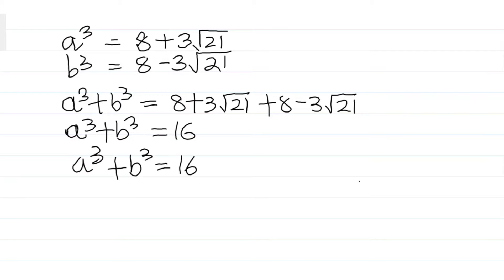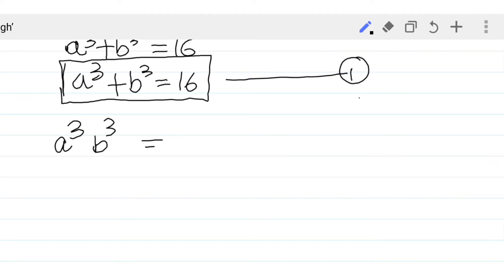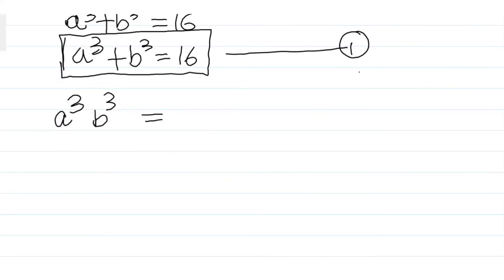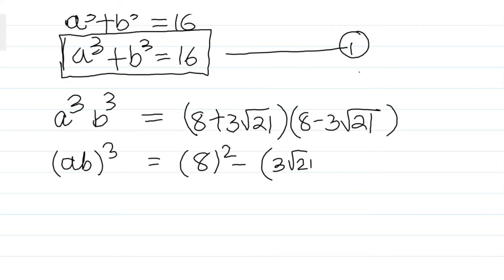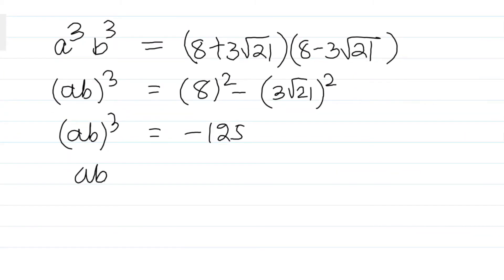Let's see now, a³ is 8 plus 3√21, b³ is 8 minus 3√21, and they are conjugates, so basically (ab)³ is nothing but 8² minus (3√21)², from where we'll get (ab)³ equals minus 125, and we know that ab equals minus 5. This is our second equation.